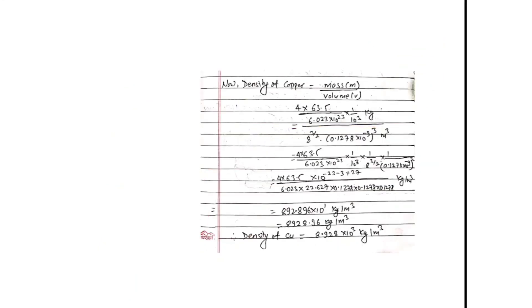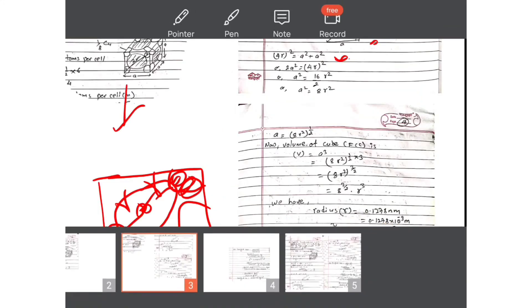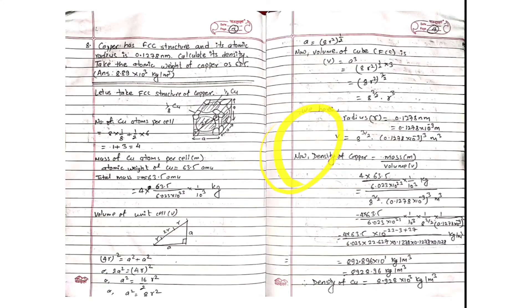We have calculated both mass and volume, so now let's find the density of copper. Density equals mass upon volume. We substitute the mass term and the volume term and do the mathematical calculation carefully, keeping numerical terms on one side and powers of 10 on the other side. The result comes out to approximately 8892.96 kg per meter cube, which matches the given answer of 8.89 × 10³ kg/m³.